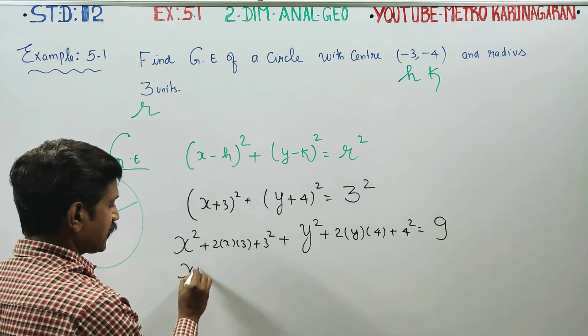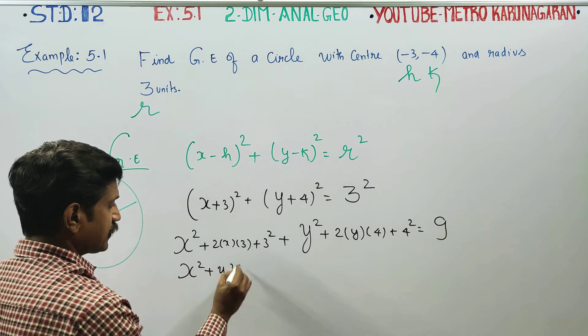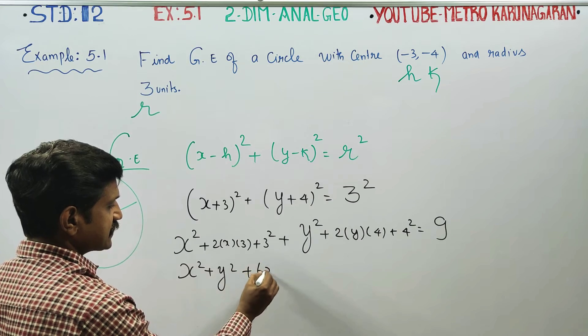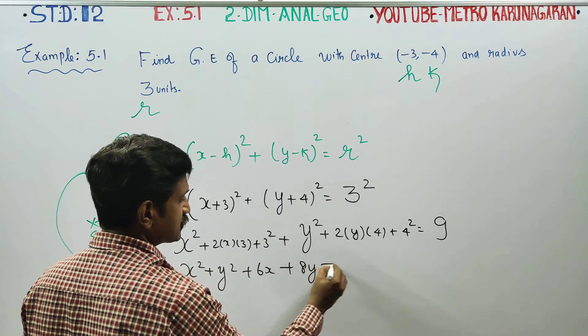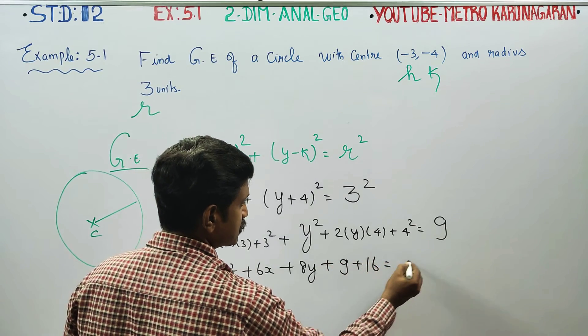Writing in order: x² first, then y², then 2 times 3 is 6x, 2 times 4 is 8y, 3² is 9, 4² is 16.